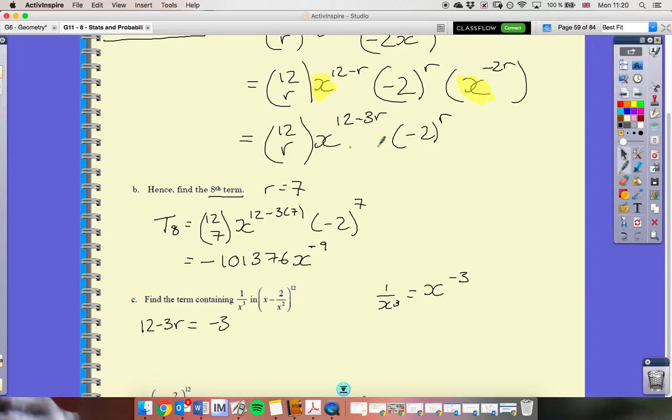And this is where this simplified version helps. It helps in finding specific terms like this. If I solve this, I can find that r has to be 5. So, when r equals 5, I should find that I get an expression where there's an x to the negative 3 term in it.